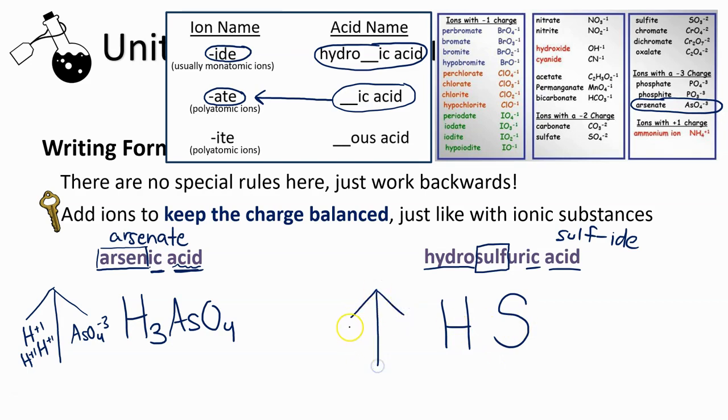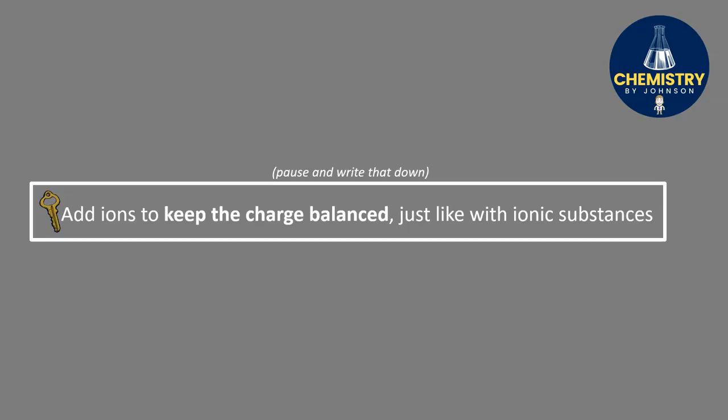To check that the charges are balanced, we'll test out H with a +1 and sulfide which actually has a -2 charge. So here these are not balanced. I would need to add a second hydrogen, making the final formula H2S.